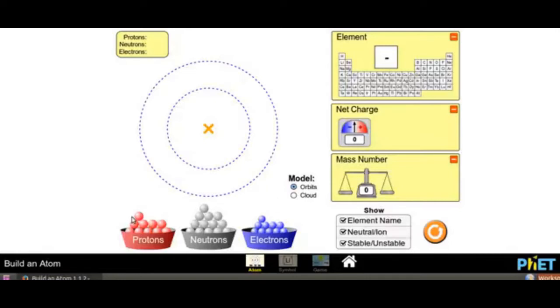Children, here you can observe three buckets. Can you tell me what are these? Yes, here we have protons, neutrons and electrons. These are constituents of atom. Atoms consist of particles including protons, neutrons and electrons.